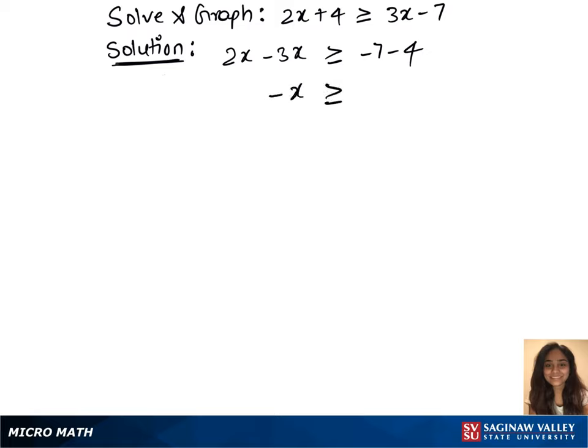So that's minus x greater than or equals to minus 11. Now multiply minus on both sides, so that gives us x less than or equals to 11. Now put this in interval notation, that is minus infinity to 11.